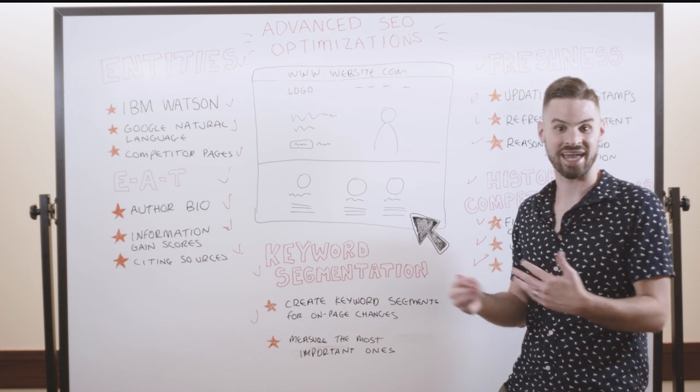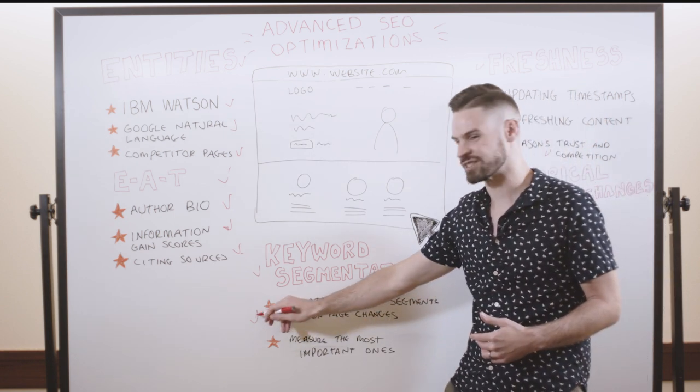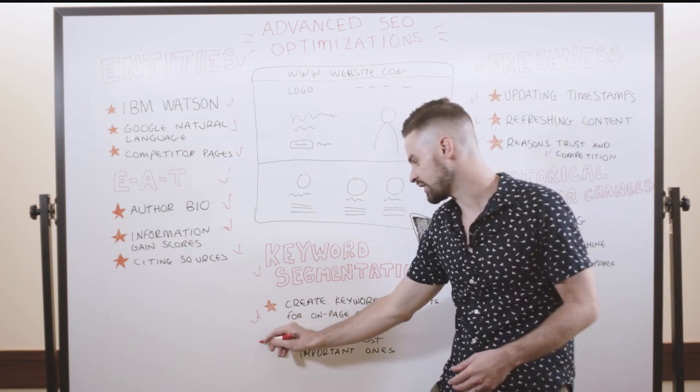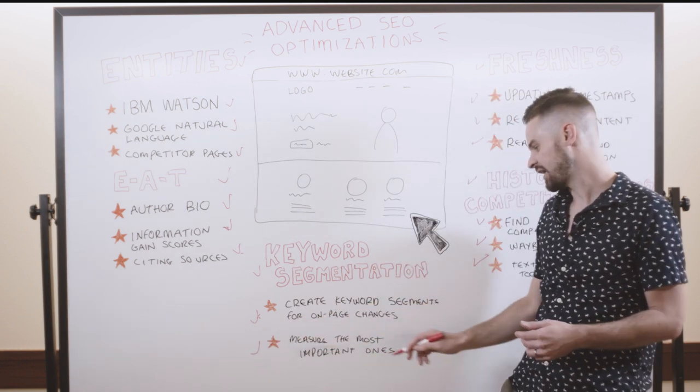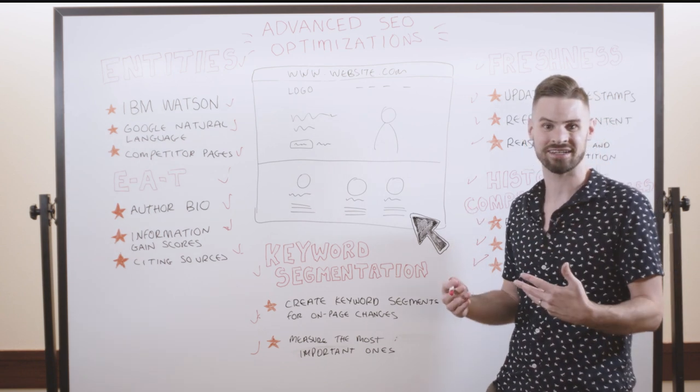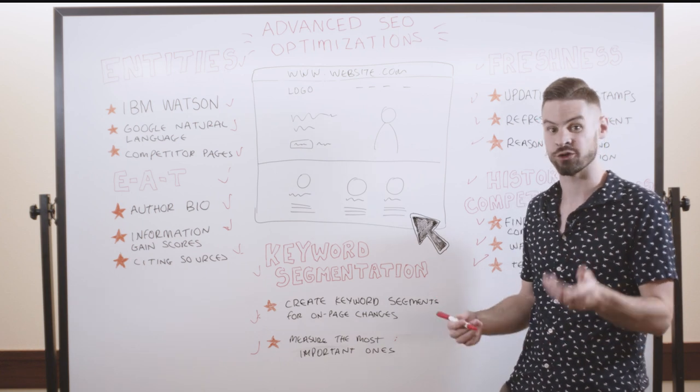If we update entities, if we update freshness, if we update EAT, we can create keyword segments in all of those different instances, and then over time, we can compare the segments against each other and measure what the most important ones have been. That will actually give you better data about what type of on-page optimizations work best for your specific sites.